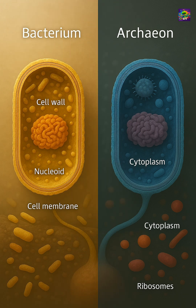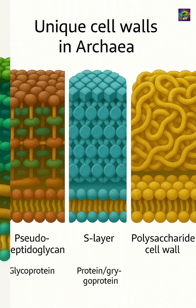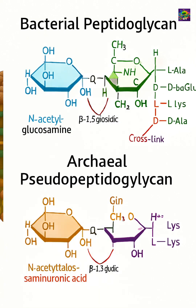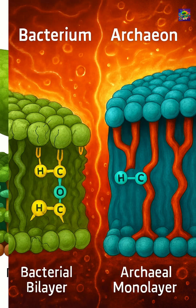Let's start with the cell wall. Most bacteria have cell walls made of peptidoglycan, a mesh-like polymer of sugars and amino acids that gives them strength. Archaea, however, don't use peptidoglycan at all. Instead, their cell walls are made of unique substances like pseudopeptidoglycan, proteins, or polysaccharides. This one difference alone means that antibiotics that target bacterial cell walls often have no effect on archaea.